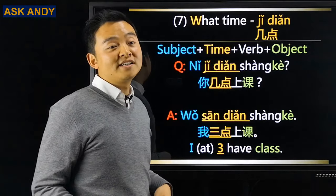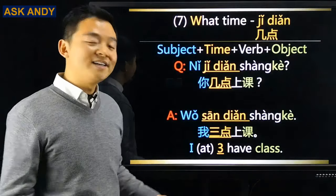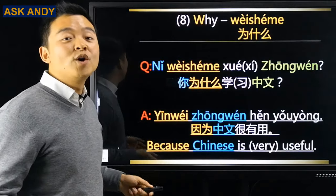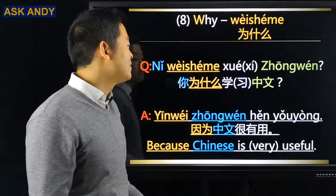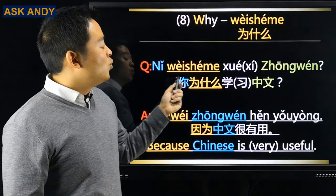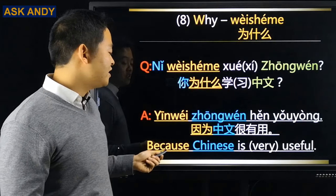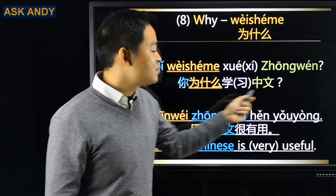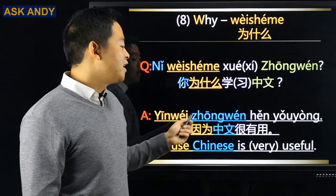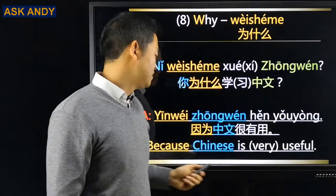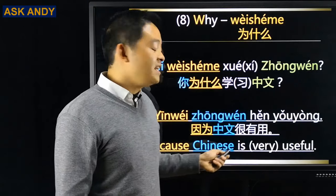No matter what pattern the question uses, just quote and replace. For why — 为什么 — it's a bit different: you must start your answer with because — 因为. Then add a new SVO sentence. 你为什么学习中文? → 因为中文很有用 (Because Chinese is very useful).